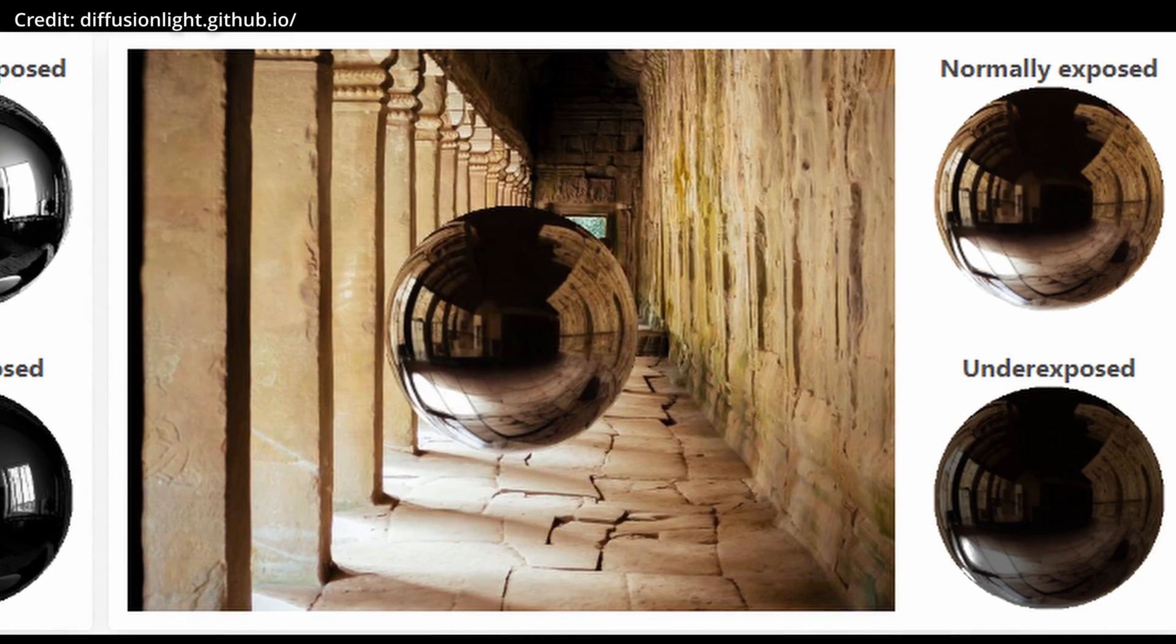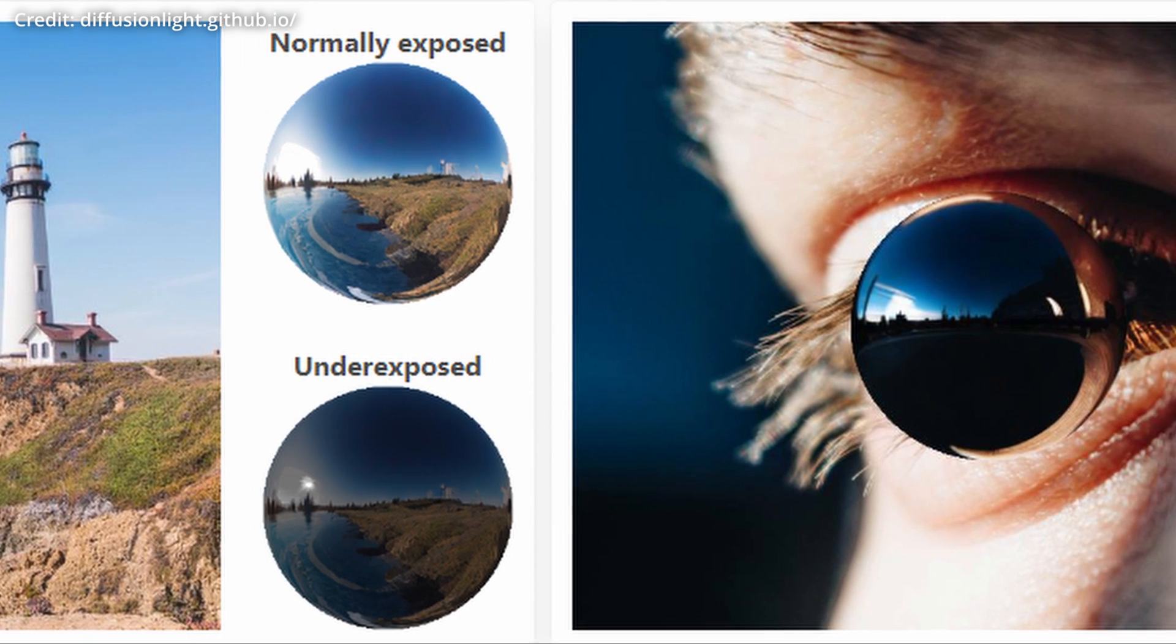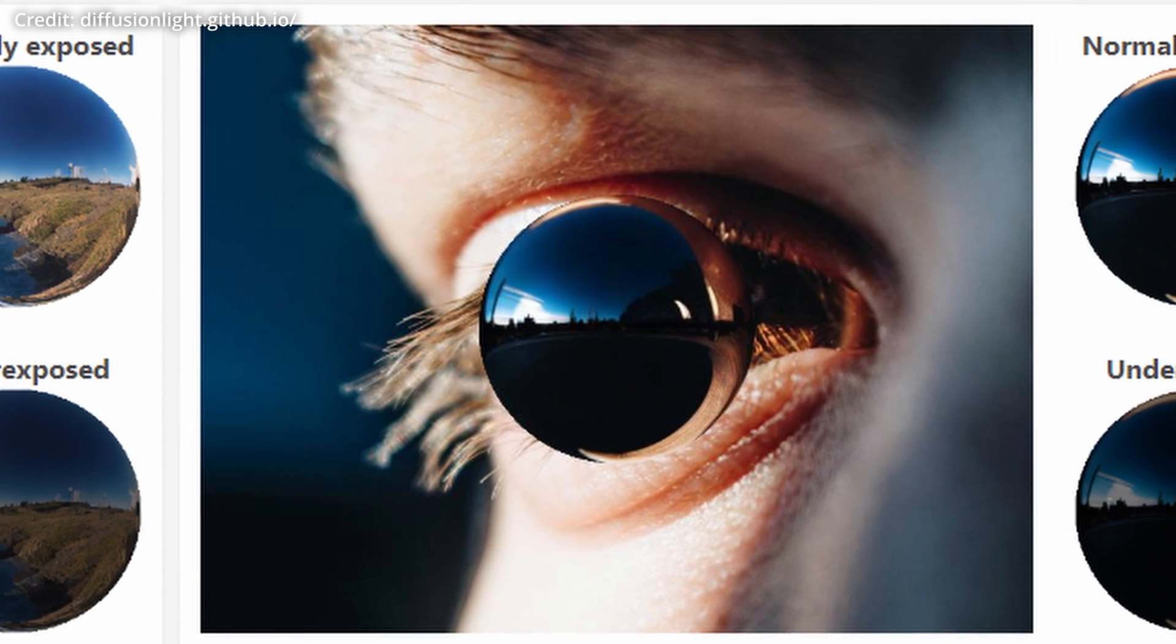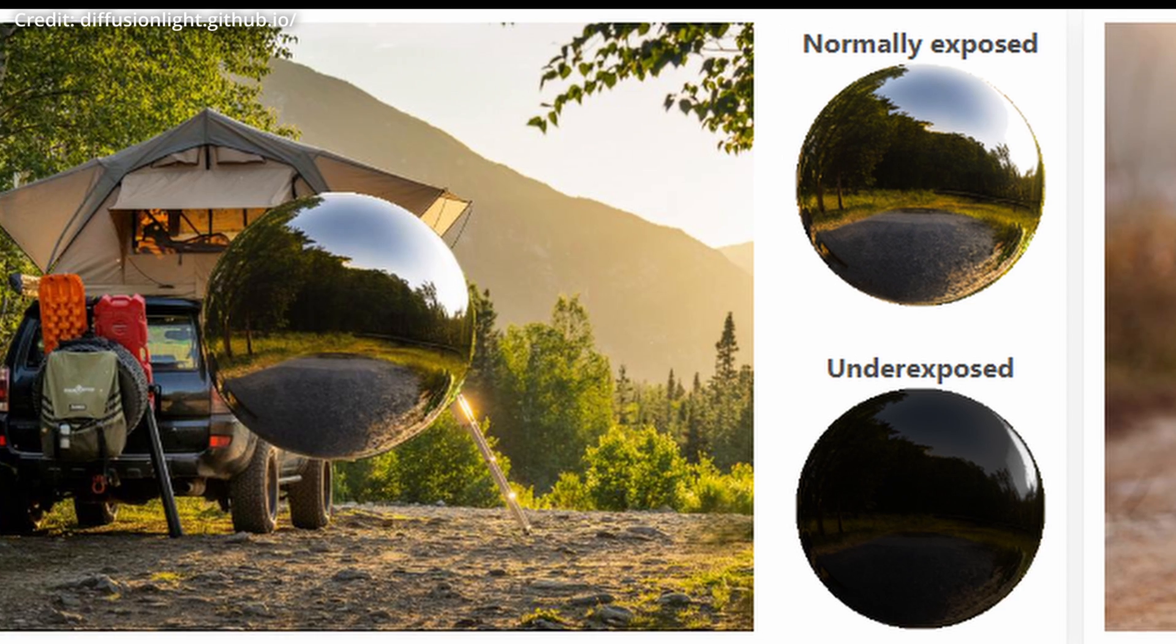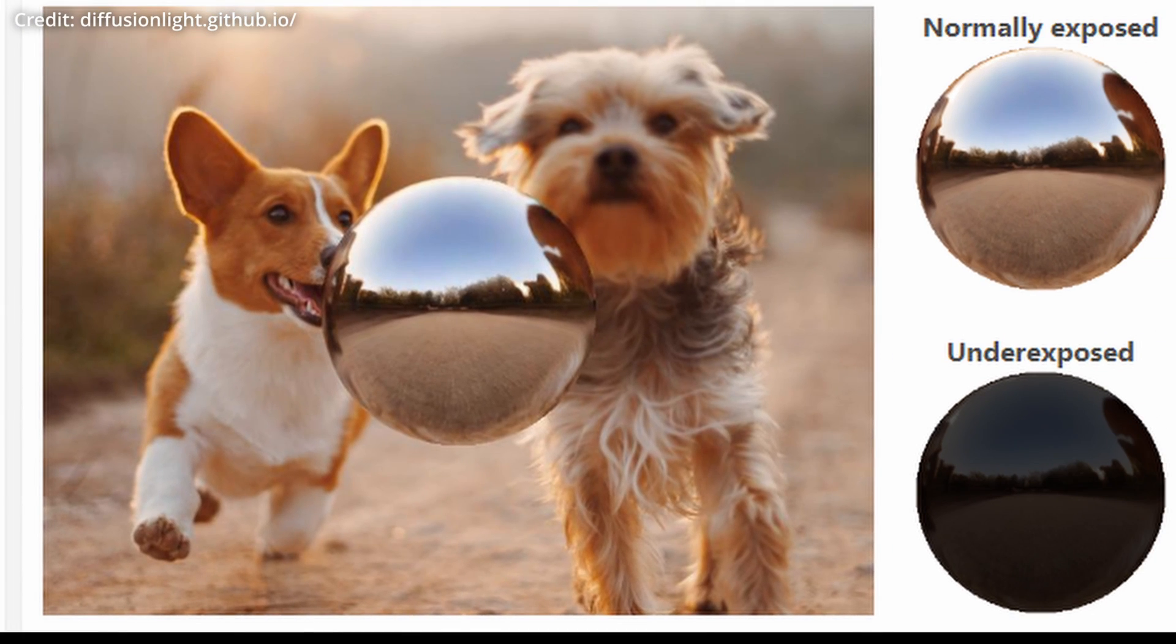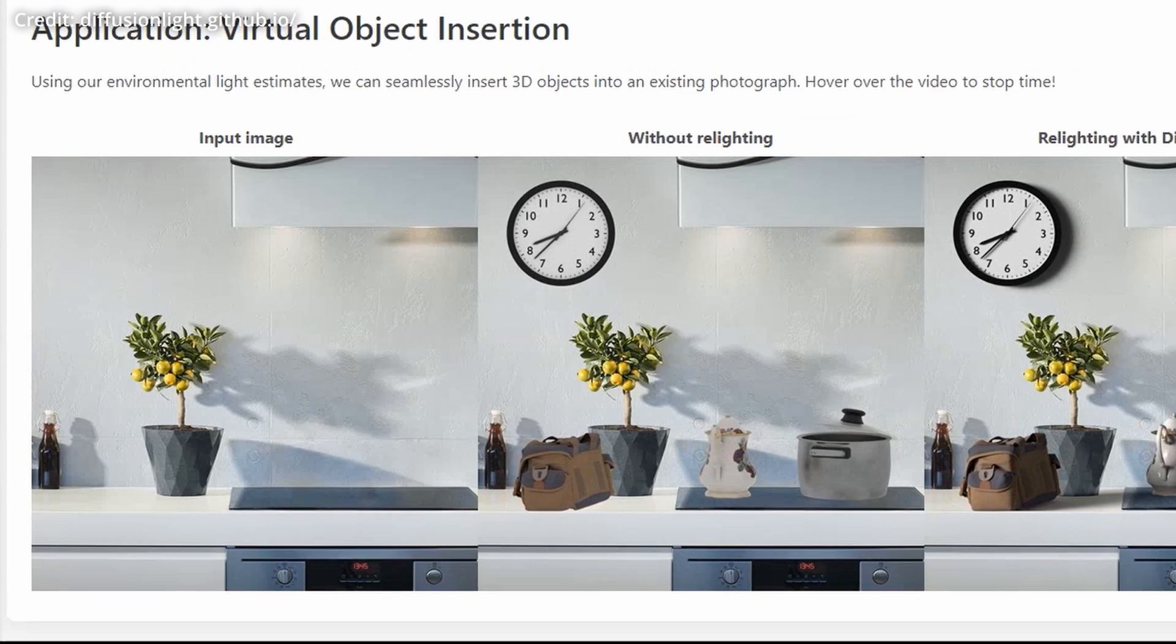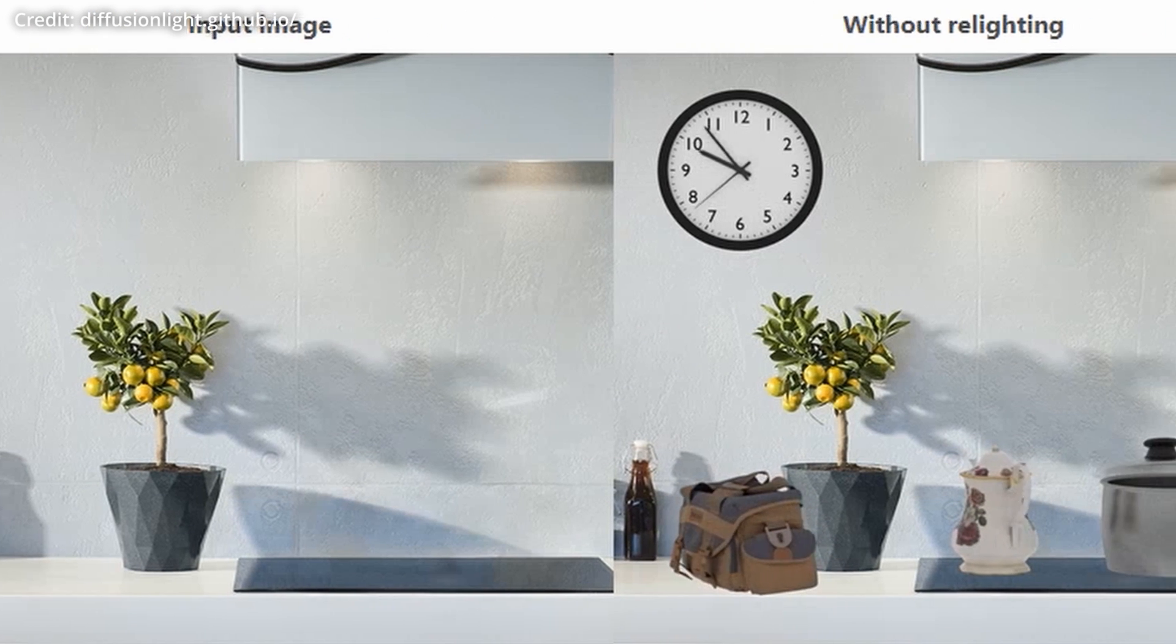Diffusion Light leverages diffusion models trained on billions of standard images to render a chrome ball within an input image, effectively acting as a light probe. This simple yet effective technique marks a substantial improvement over traditional methods, offering a versatile solution to accurately estimate lighting in a single image.